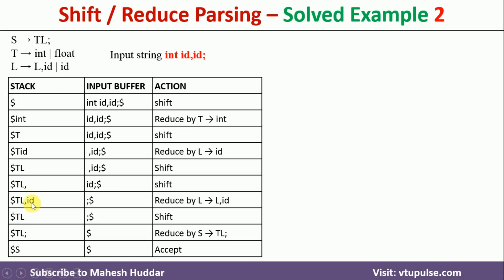After shifting comma, 'id' is shifted onto the stack top. Once 'id' is on the stack top, we apply a reduce operation. Looking at the rule L → L comma id, 'L comma id' is reduced to L, giving us 'T L' on the stack. The input buffer now has only 'semicolon'. We shift this semicolon onto the stack top — that is the shift operation, and nothing remains in the input buffer. Now looking at 'T L semicolon' on the stack, we can reduce this to S. That is the reduce operation.